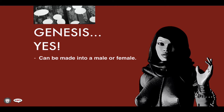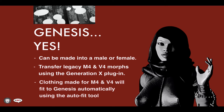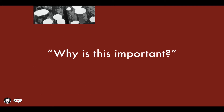The newer generations of Genesis can't do that — you have one Genesis figure for male and another for female. You can also transfer legacy Michael 4 and Victoria 4 morphs using the Generation X plugin, and clothing made for Michael 4 and Victoria 4 will fit Genesis automatically using the AutoFit tool. Now, if you're new to Daz Studio, what I just talked about might be total gibberish, so let me give that a bit of context.